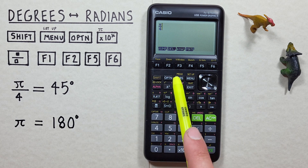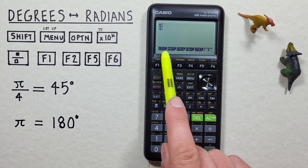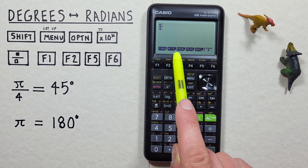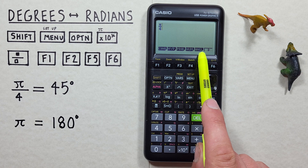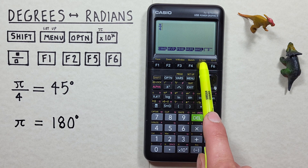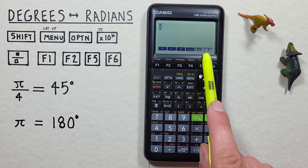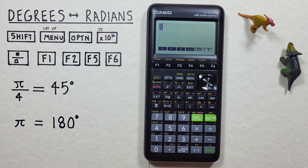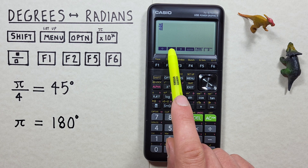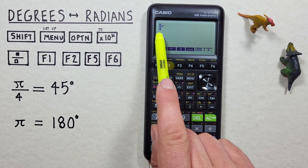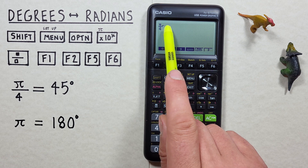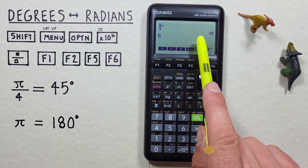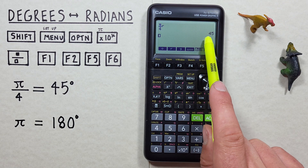So to do that, we press the option key. We see this menu along the bottom. We need to press f6 once so that we get the next menu. Number 5 is the angle menu, so we press f5. We next see degrees, radians, or gradians. Since these are radians, we press f2 with the r. There we go — pi over 4 radians. That tells our calculator these are radians. And then the exe key. We see our pi over 4 radians has converted to 45 degrees.